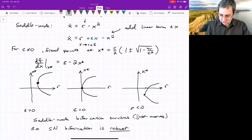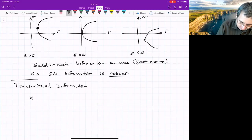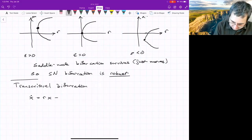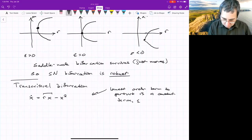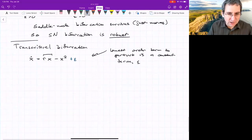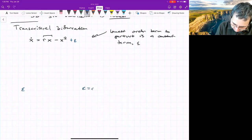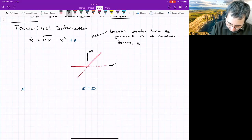All right, so what about the transcritical? Let's look at the transcritical normal form. The normal form there was x dot equals rx minus x squared. We wouldn't add on a linear term. We would add on a constant term. The lowest order term to perturb this is a constant term. And again, we'll call that epsilon. So we'll just add in plus epsilon. And I'll just summarize what happens. First, we'll do epsilon equals zero. We know what happens for epsilon equals zero. X equals zero goes unstable. And then x equals r goes from unstable to stable.